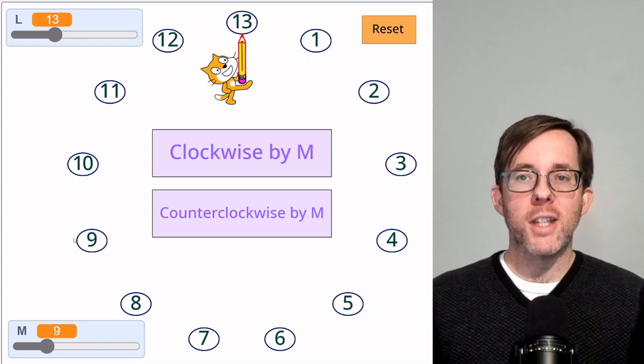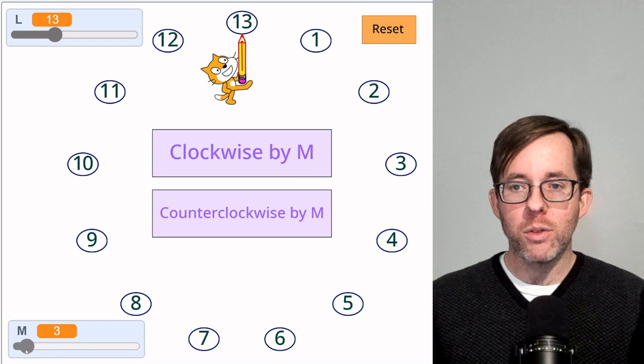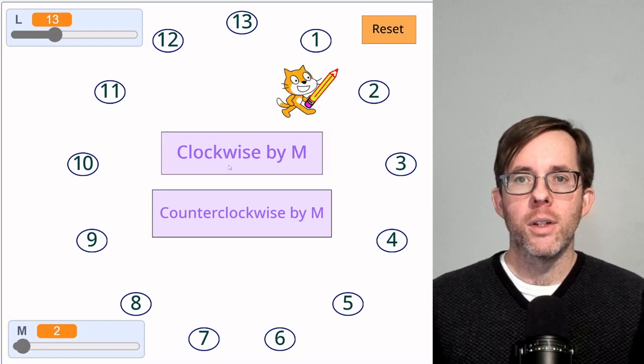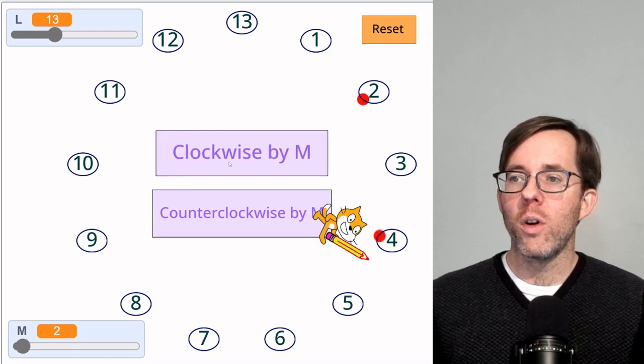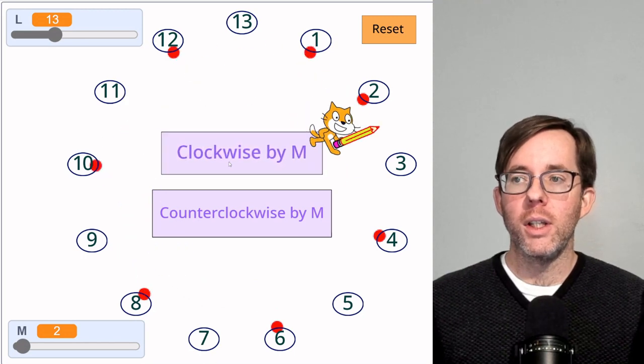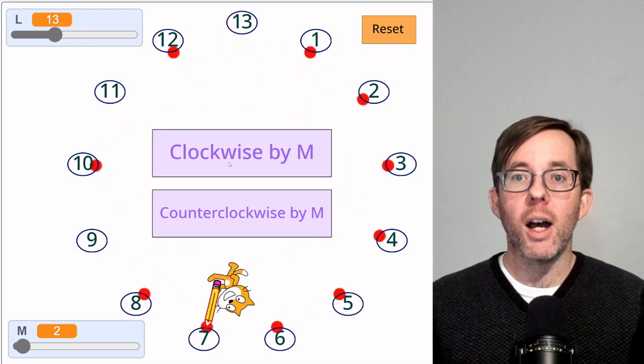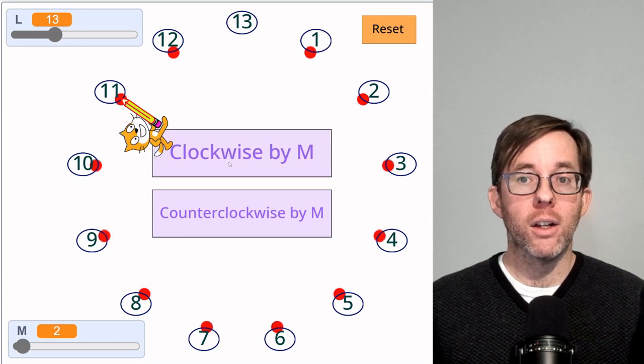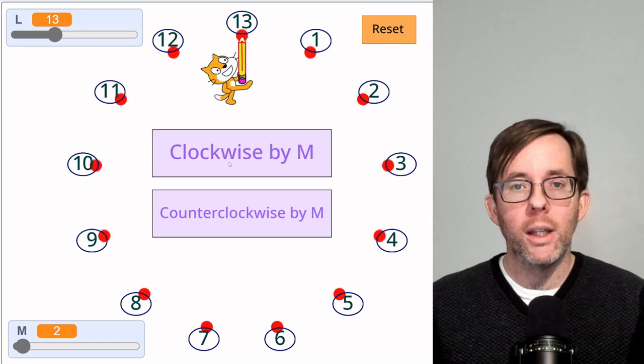Let's do one more example, this time with m equal to 2. So 2, 4, 6, 8, 10, 12, 1, 3, 5, 7, 9, 11, and 13. So here again, we hit all the times.